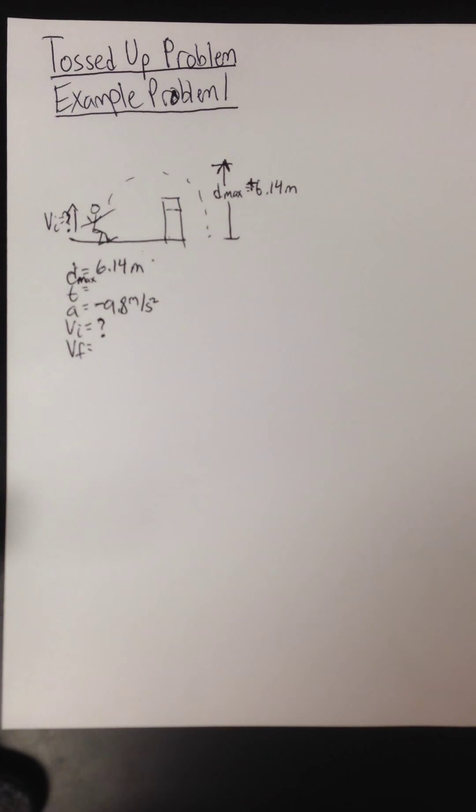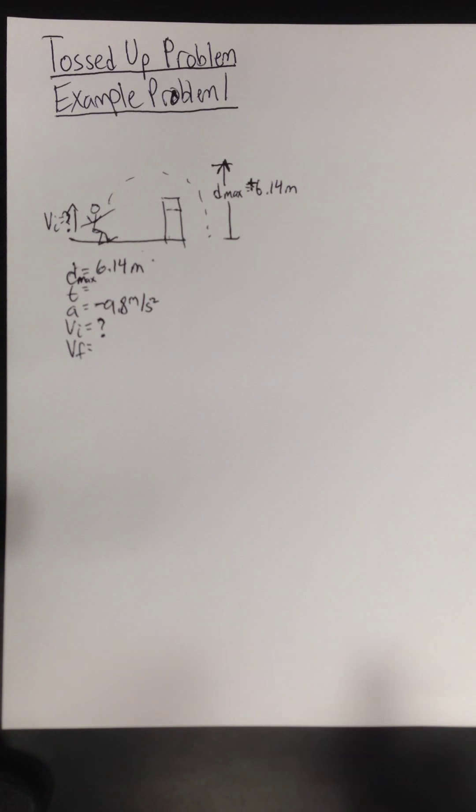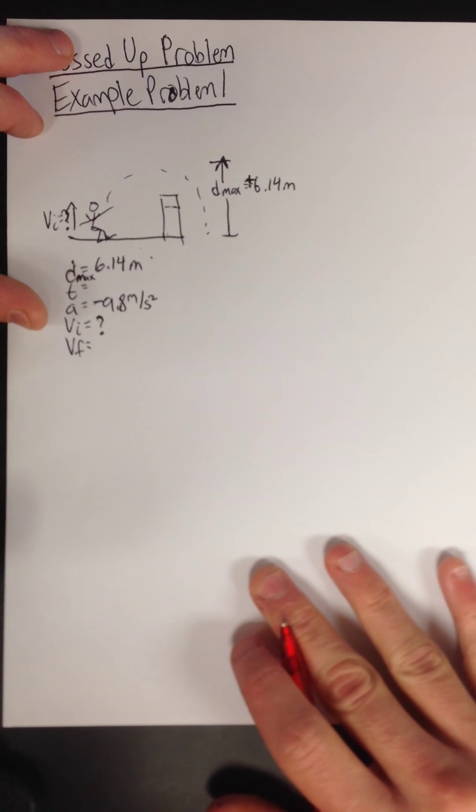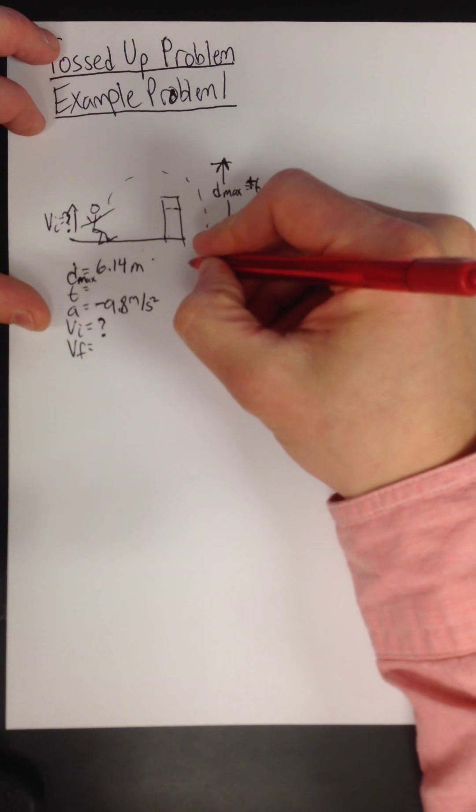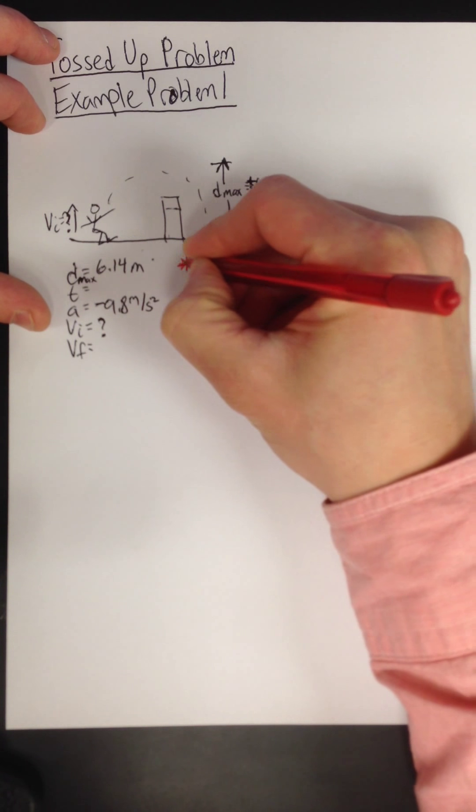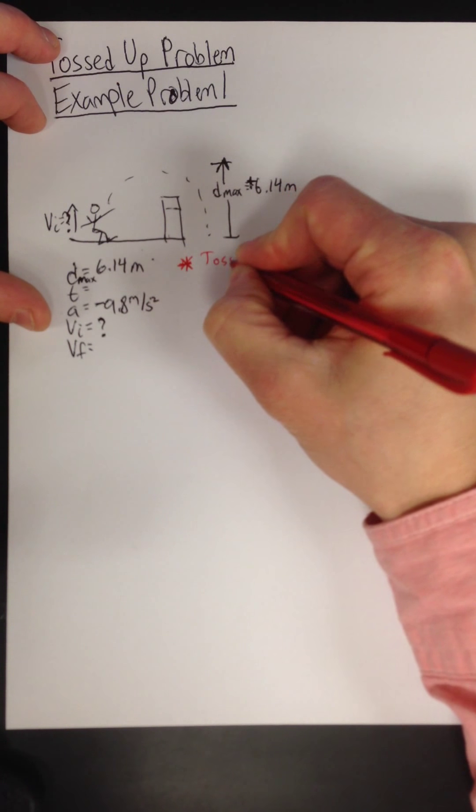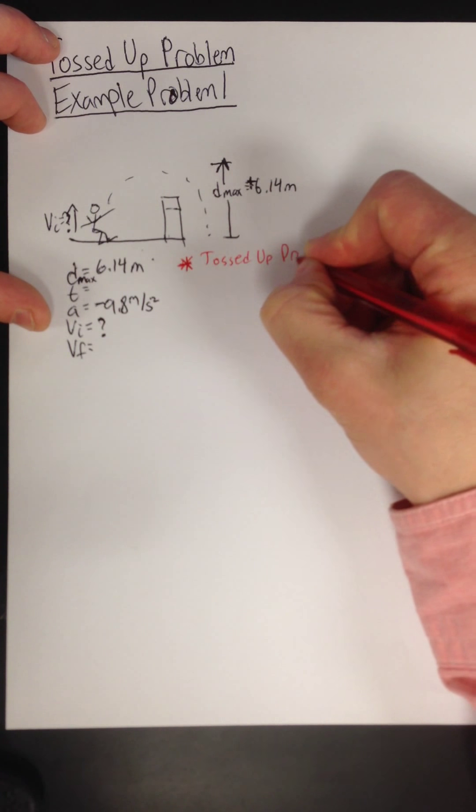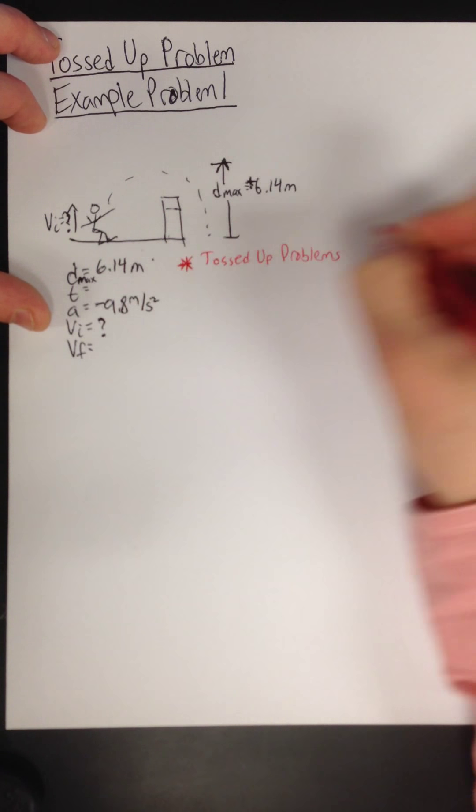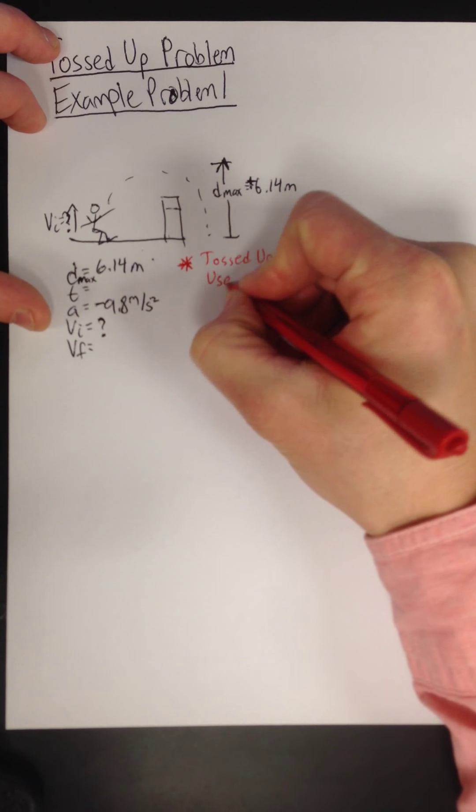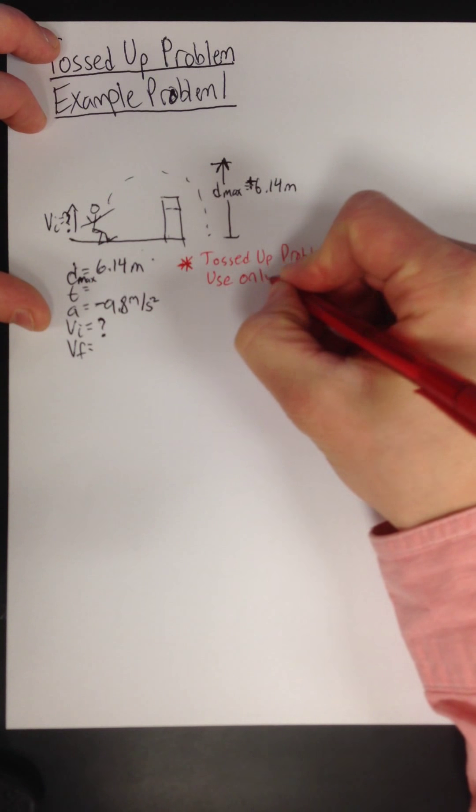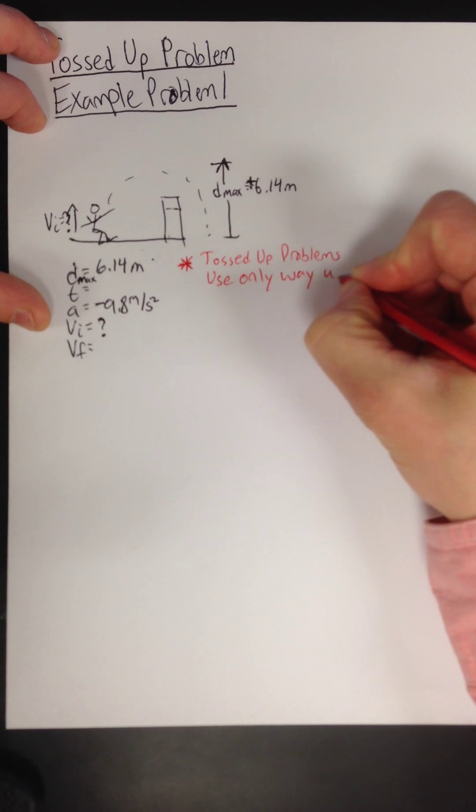This is one we should mention, that for every tossed up problem you do, I'm going to write it in red, like I wrote it on the board. Every tossed up problem you do, put this star underneath this problem.